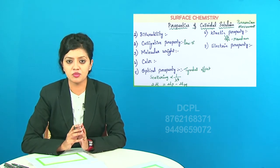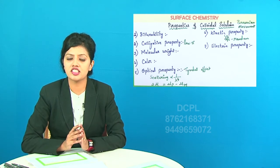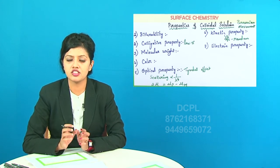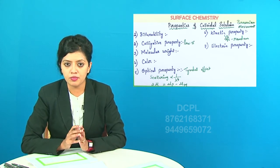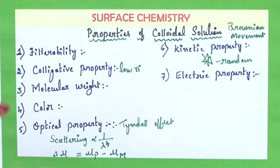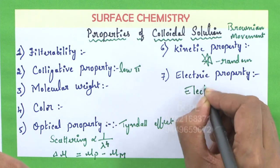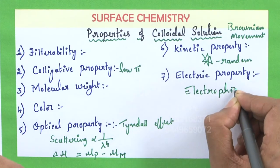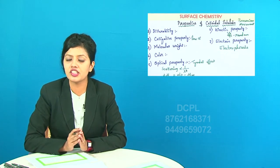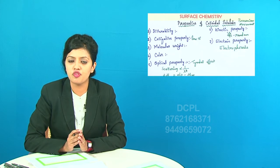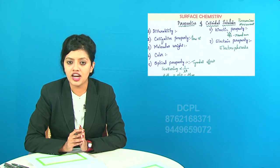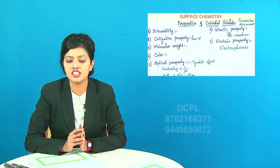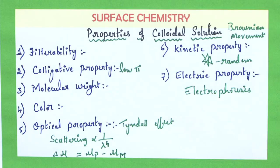The next important property is the electrical property. Colloidal particles exhibit charge, and when an electric field is applied, the charged colloidal particles move to the respective electrodes. This process of movement of colloidal particles to the respective electrodes is known as electrophoresis. Based on the direction of movement, we can determine the charge. For example, arsenic sulphide sol moves towards the positive electrode — the anode — and hence arsenic sulphide sol is negatively charged.